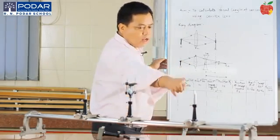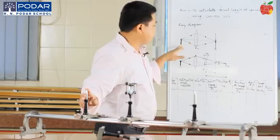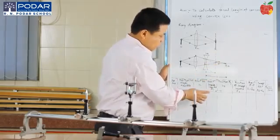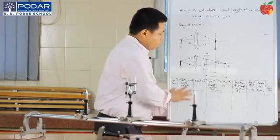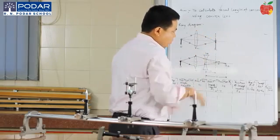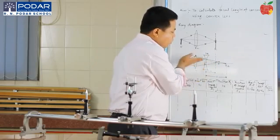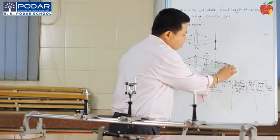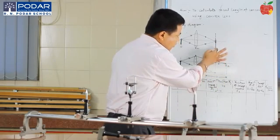First, we set up the convex lens and the object, and we try to find the inverted image produced by it. This inverted image is called I1. Later on, we place the concave lens in between. From the ray diagram, the real and inverted image I1 acts as the input, and since the concave lens is a diverging lens, the rays will diverge and meet at a particular point I2.